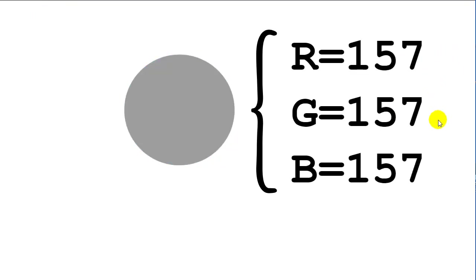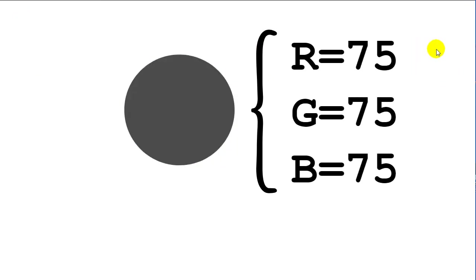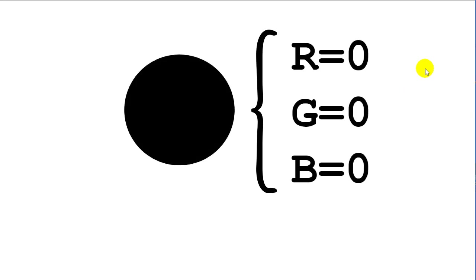If all the numbers are the same, you're going to get some sort of gray. A darker gray is a lower number — the lower the number, the darker the gray. Are you taking notes? I hope you're taking some notes. If all the numbers are zero, you've got the blackest black that you can get.